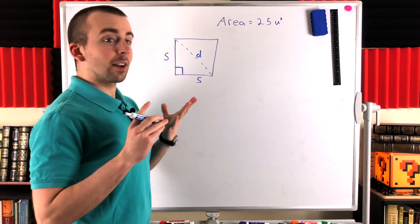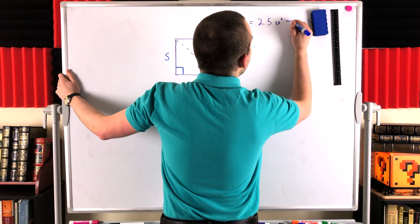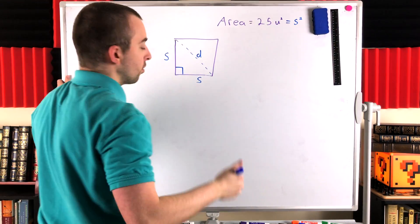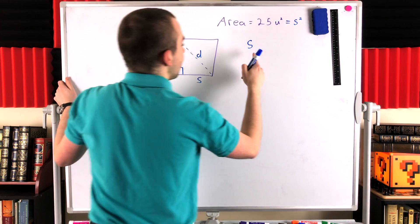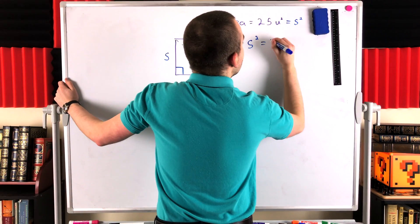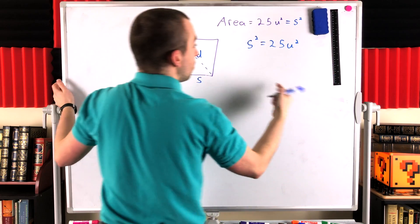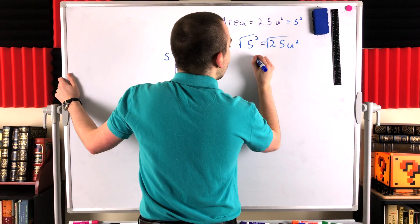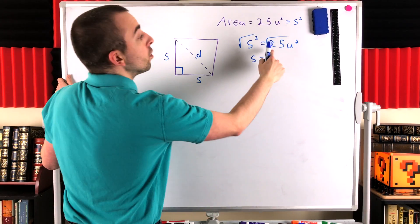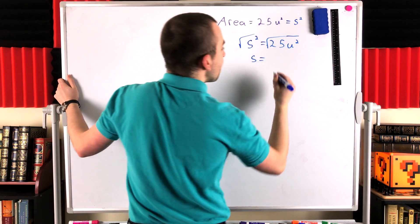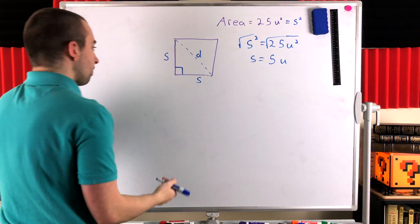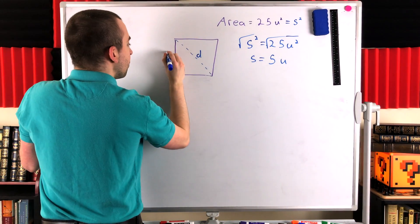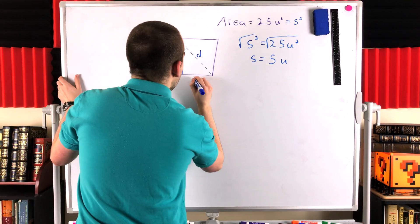Can we get the side length from the area? Of course we can, because the area of a square is just the square of its side length. So if the side length is S, the area is S squared. In particular, S squared is equal to 25 units squared. Just take the square root of both sides, and that gives us our side length. We have that the side length S is equal to the square root of 25 units squared, which is just 5 units. So we can erase these S's — we know the side lengths of our square are all 5.